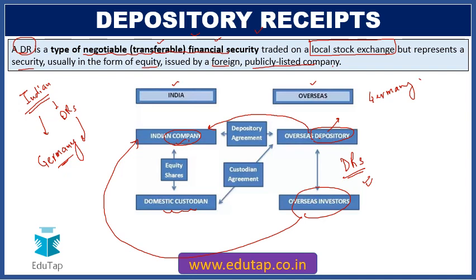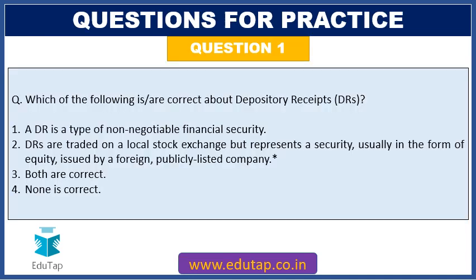This mechanism is very beneficial for Indian companies wishing to raise funds from abroad. Based on this understanding, we can clearly see that a depository receipt is a type of negotiable financial security — so option A is incorrect. Only option B is correct, and that is the answer for this question.